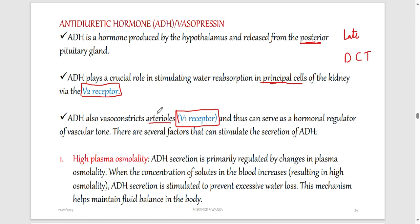When ADH binds to V1 receptors on arterioles, it causes vasoconstriction — the blood vessel lumen becomes smaller. Think of a hose pipe: if you hold your hand in front to make it smaller, pressure increases. So vasoconstriction elevates blood pressure in the vessels. When ADH acts via V2 receptors in the principal cells, it causes water to be taken back into the blood instead of going into urine.